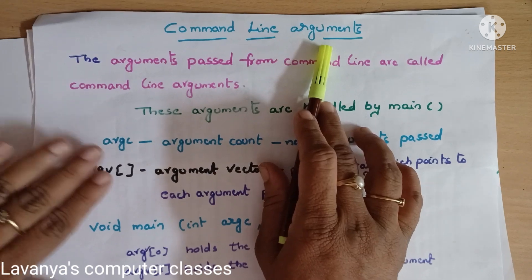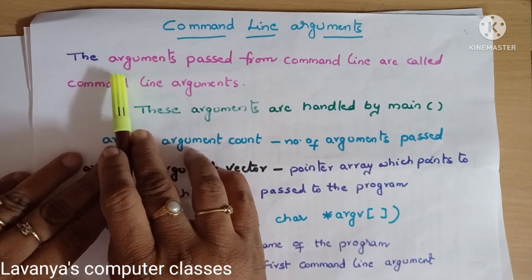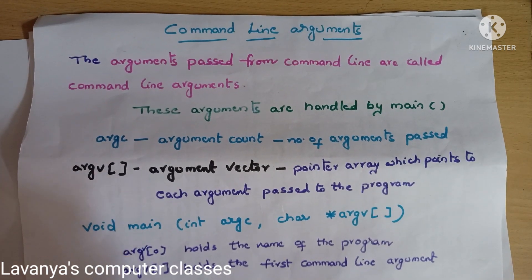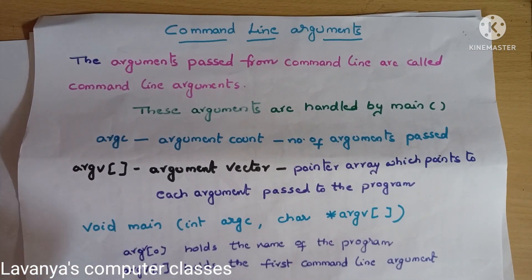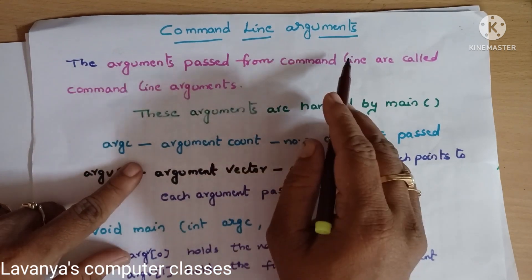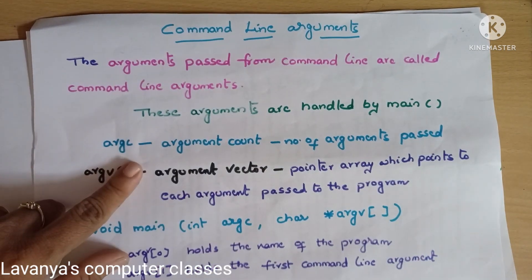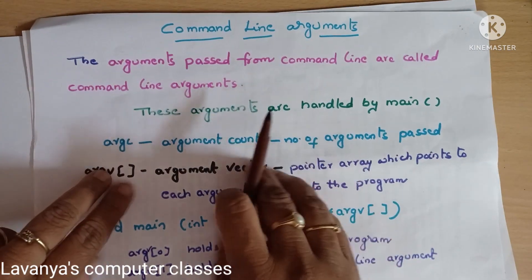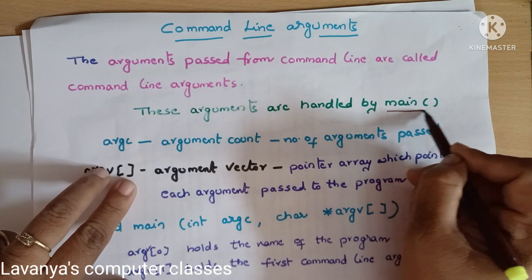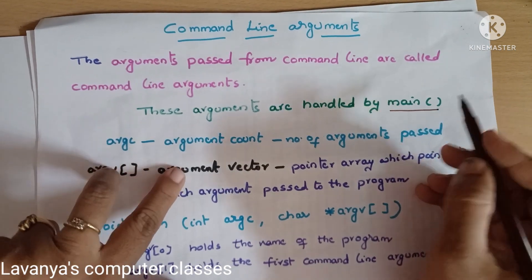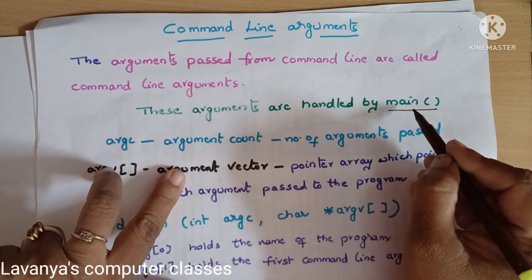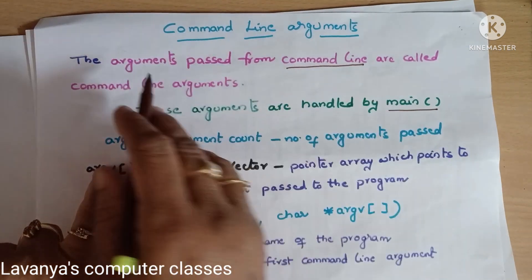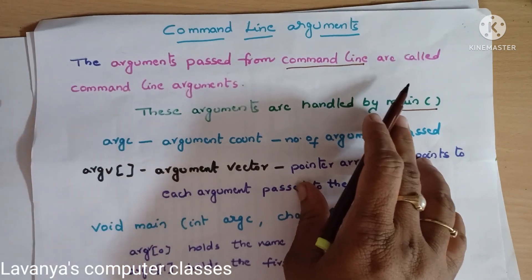What are command line arguments? The arguments passed from command line are called command line arguments. Any arguments passed from command line are of this type. These arguments are handled by the main function. If we are sending any arguments through the main function, that is also from the command line — those are called command line arguments.